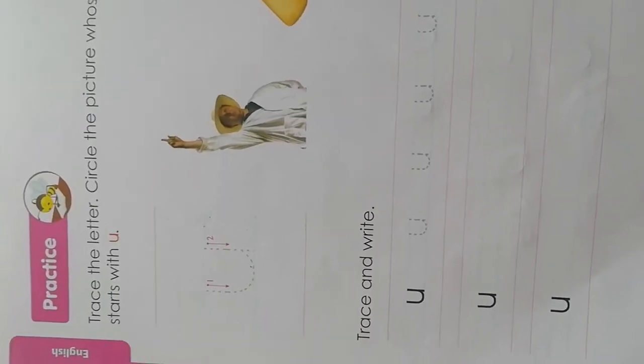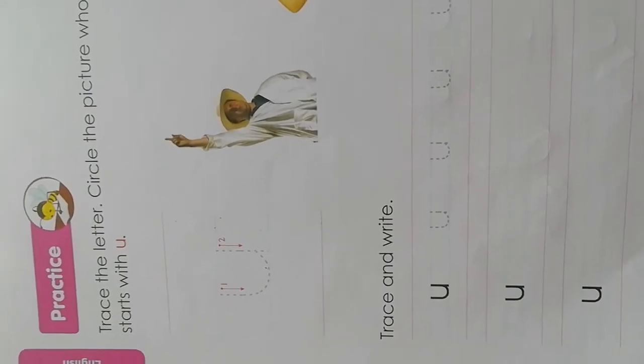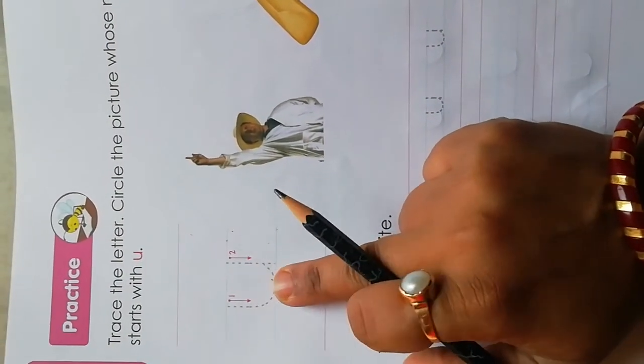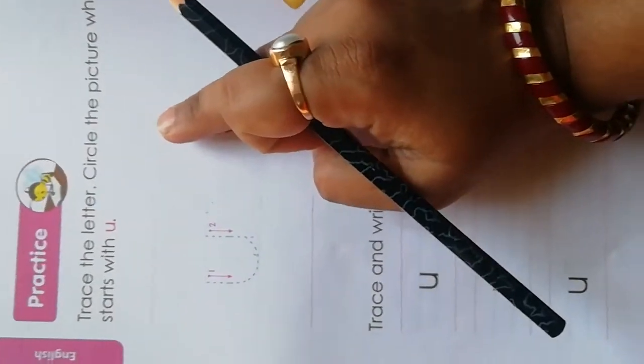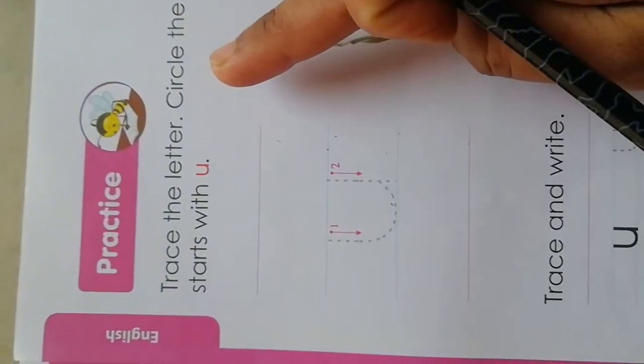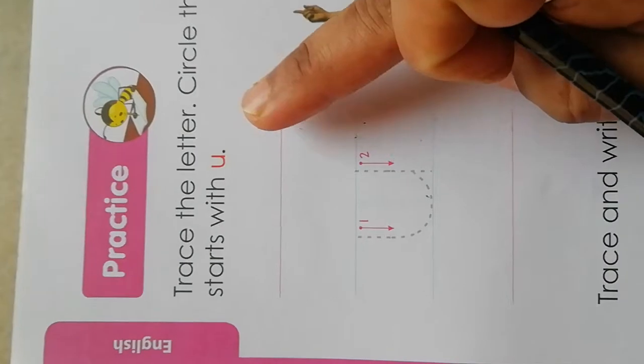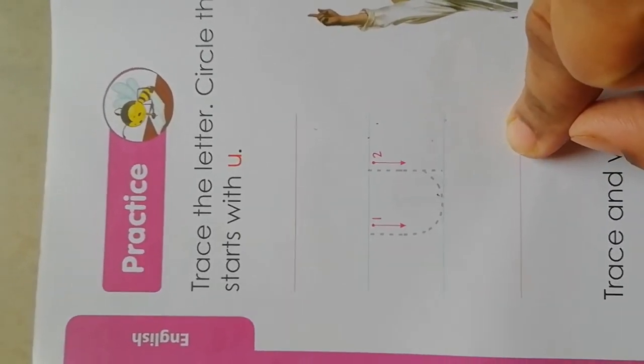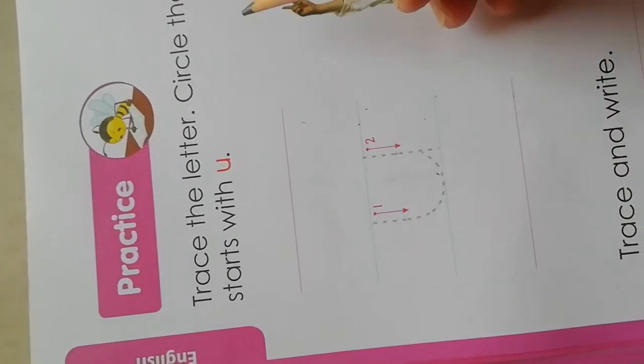Hello kids, today we learn how to trace and how to write small letter u. Now, how many lines are there? There are four lines: red line, blue line, blue line again, red line.